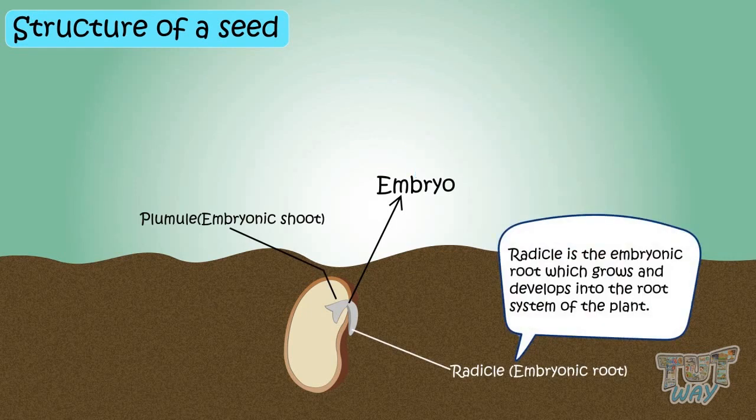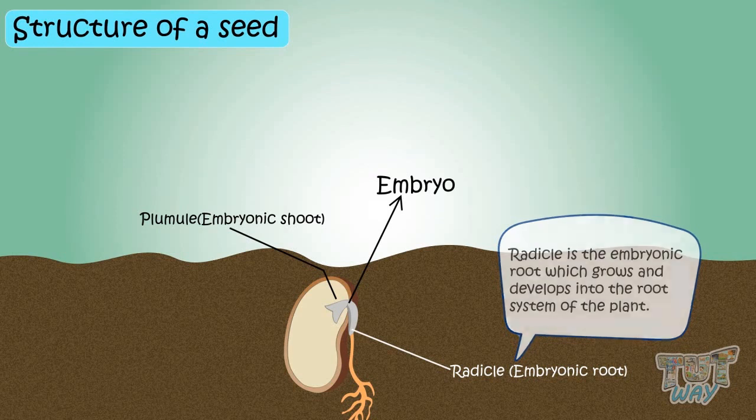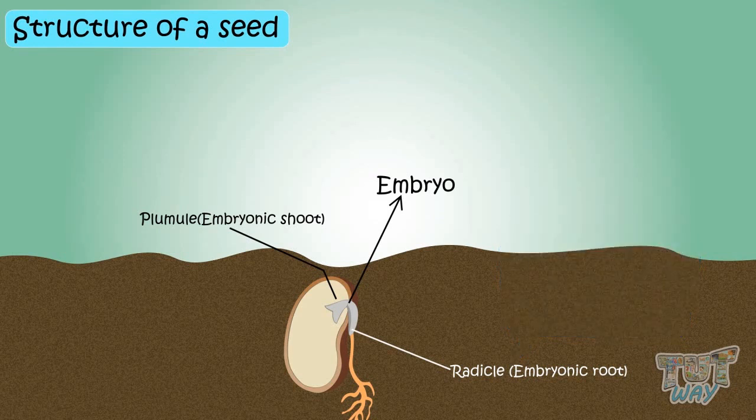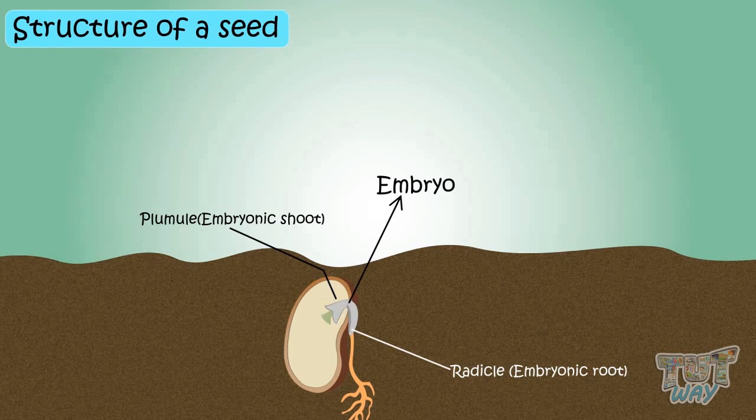The radicle is an embryonic root which grows and develops into the root system of the plant. The plumule is an embryonic shoot that grows and develops into the shoot of the plant.